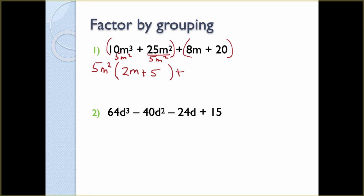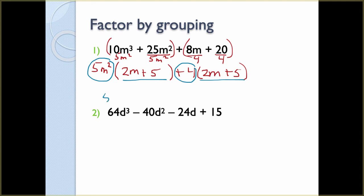For the second group, the largest number going into 8 and 20 is 4. Since only the first term has an m, we can't divide out any m's, so the GCF is just 4. Dividing: 8 ÷ 4 = 2, m stays, and 20 ÷ 4 = 5. So inside the second parentheses we have 2m + 5. We check — 2m + 5 and 2m + 5 match, so that is one factor group, and 5m² + 4 is the second factor group.